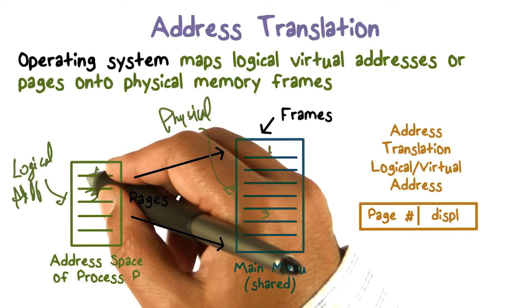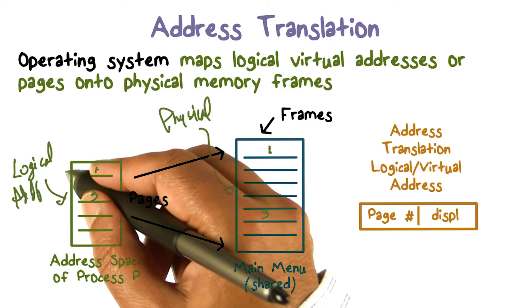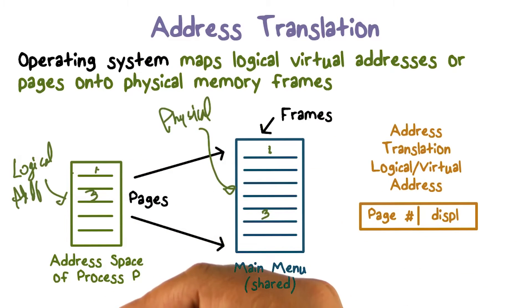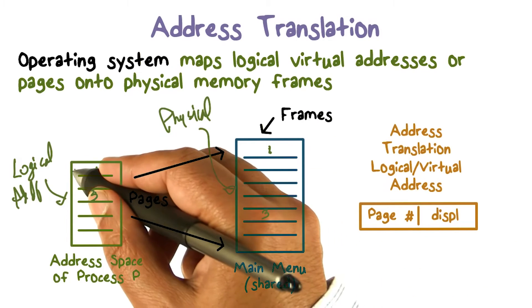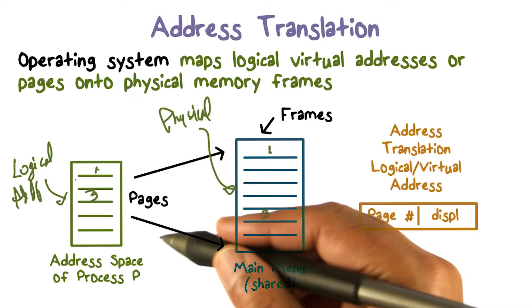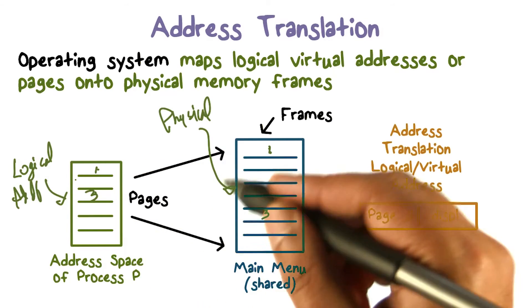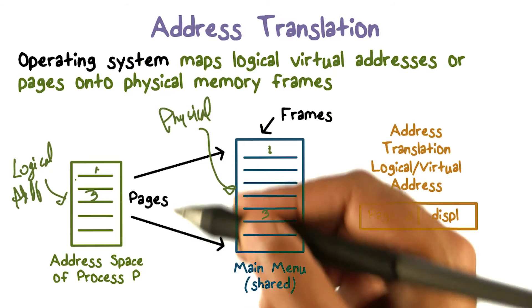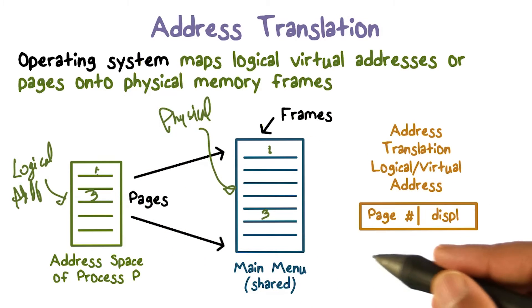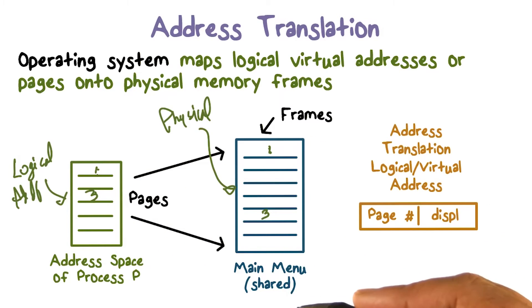So we would say the address space really is a page number and displacement within that page. So this is page 0, and if you're location 10, then it's page 0,10. So 0 is the page and 10 is displacement within that page.